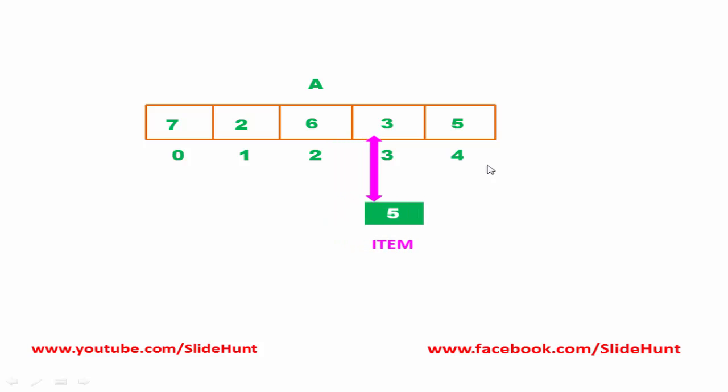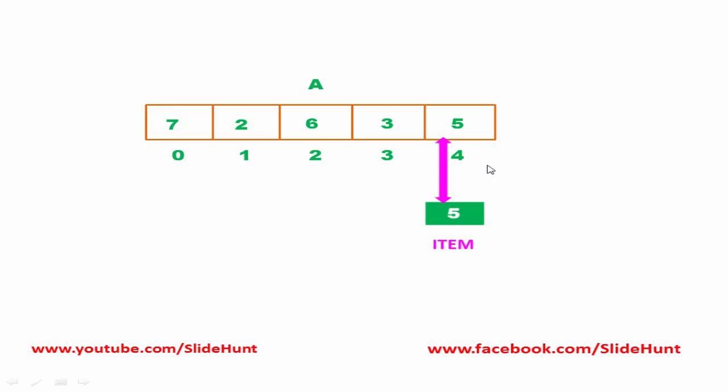Now we compare item with the element at index 3 — is 5 found? No. We check the next element. Now we compare item with the element at index 4 — is 5 found? Yes. We find it at index 4 and the search is successful.